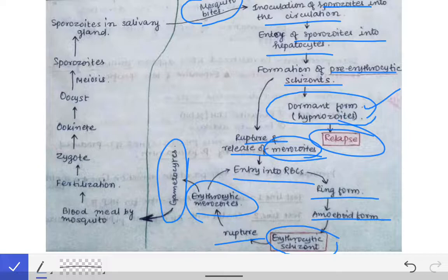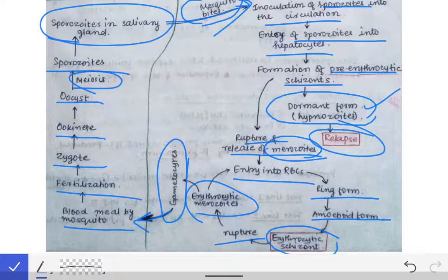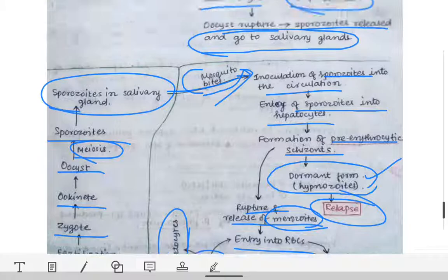Some of the erythrocytic merozoites are converted into gametocytes and enter the mosquito via a blood meal. In the mosquito they undergo fertilization, converting into a zygote, then ookinete, then oocyst. Meiosis occurs in the oocyst, sporozoites are formed, and they enter the salivary glands. When the mosquito bites again, sporozoites are inoculated into the human body, completing the full life cycle of Plasmodium. That is all for malaria part one; part two will follow.